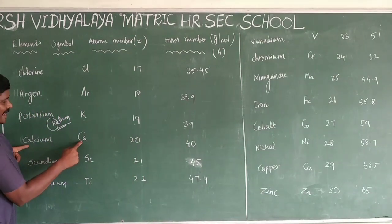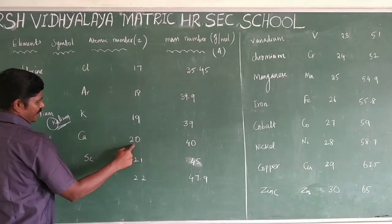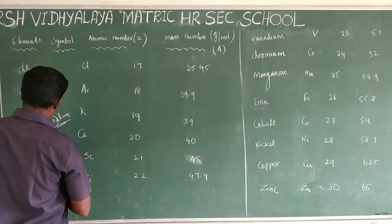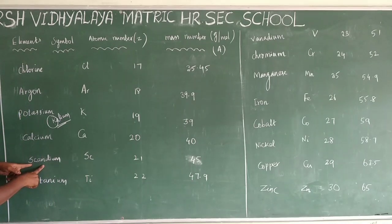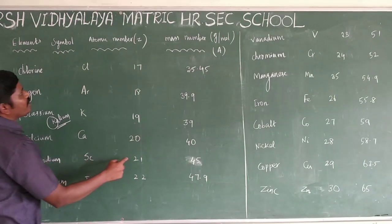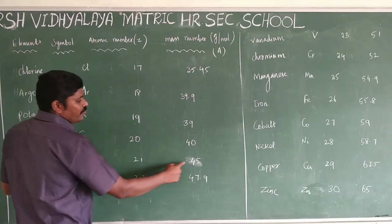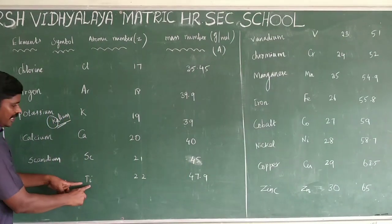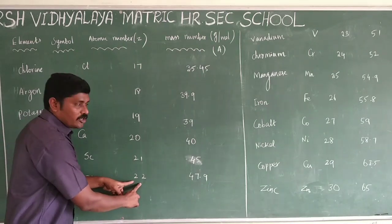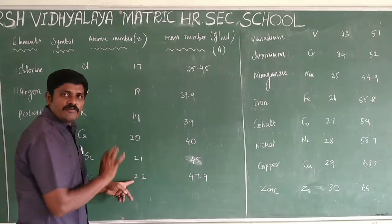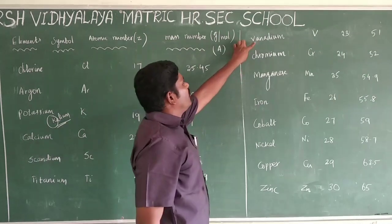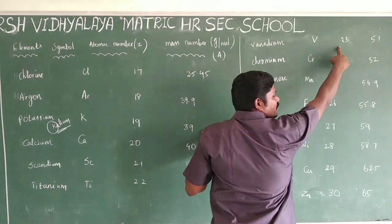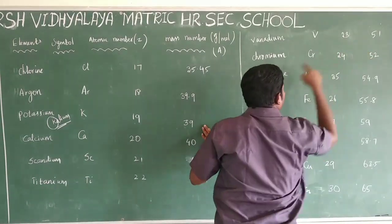Calcium, symbol Ca: atomic number 20, mass number 40. Scandium: atomic number 21, mass number 45. Titanium, symbol Ti: atomic number 22, mass number 47.9. Vanadium, symbol V: atomic number 23, mass number 51.